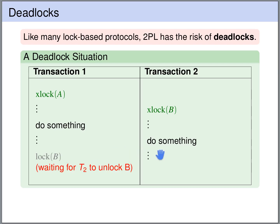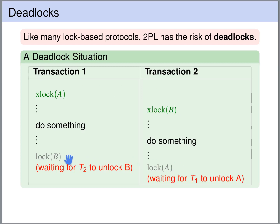Now let's say that transaction 2 tries to obtain a lock on A — again, it doesn't matter whether shared or exclusive. Because transaction 1 holds an exclusive lock on A, this lock will be blocked. So transaction 2 is waiting for transaction 1 to unlock A. So both transactions are now stuck. Transaction 1 cannot progress — it waits for transaction 2. Transaction 2 cannot progress — it waits for transaction 1. Both wait for each other indefinitely.